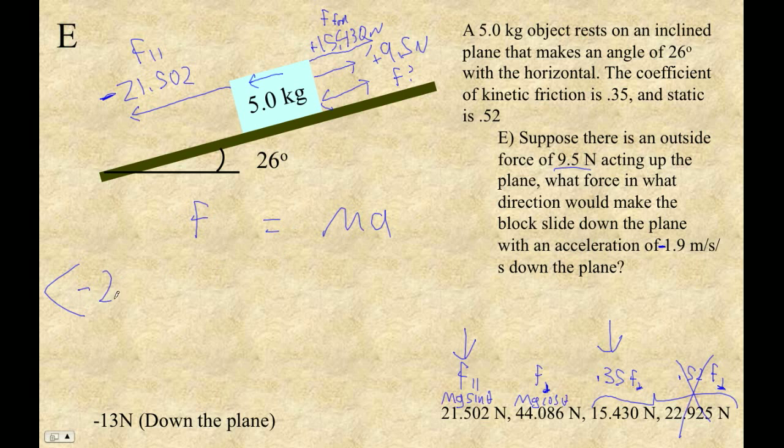So our forces are negative 21.502, and then we've got plus 15.430. Then we've got plus 9.5. That's some unknown up the plane force. Plus some unknown force. Holy cow. How do I expect you to do this? Equals 5 times, and then the acceleration is down the plane. So negative 1.9. Let's just pause a moment and make sure we've got everything.